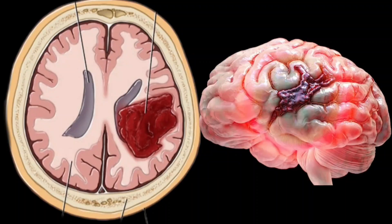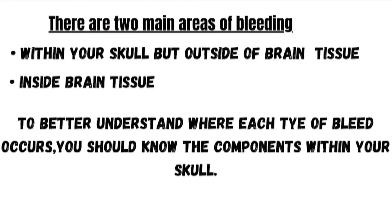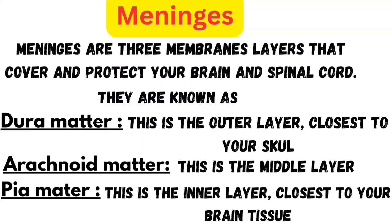To truly understand where and how these types of bleeds occur, you first need to understand the basic anatomy of the skull and the brain's protective layers — the meninges. Meninges are three membrane layers that cover and protect your brain and spinal cord. They are known as the dura mater, arachnoid mater and pia mater.